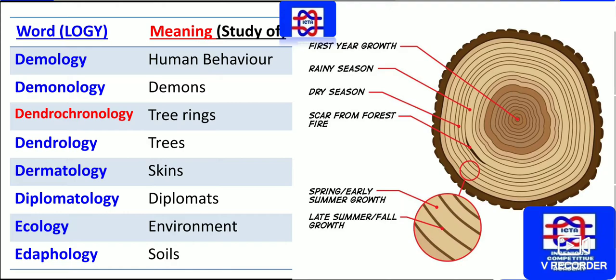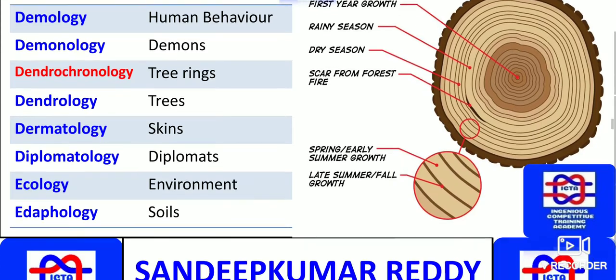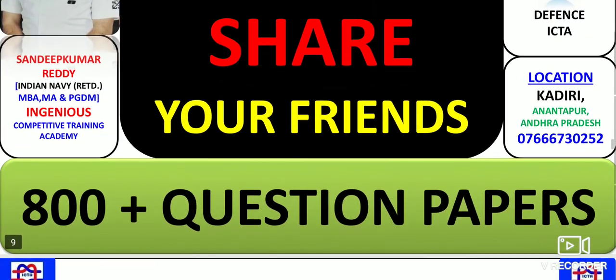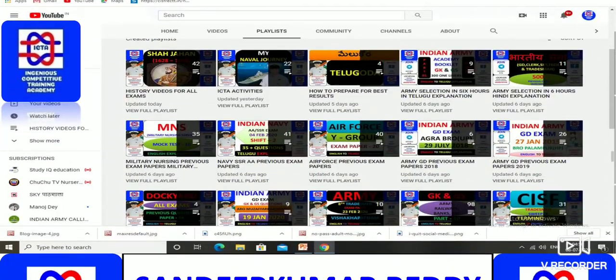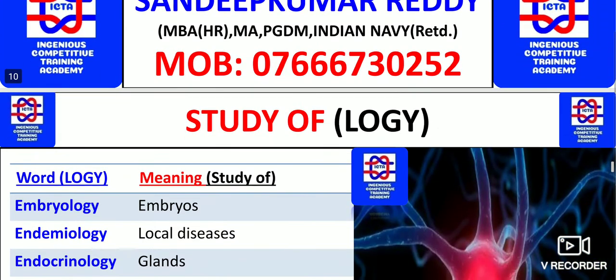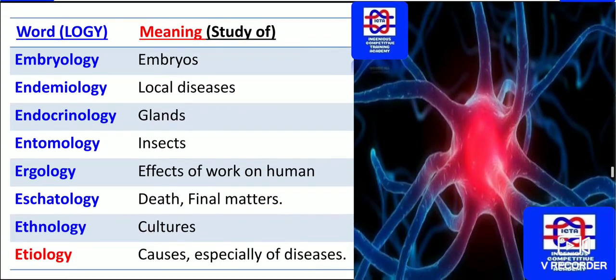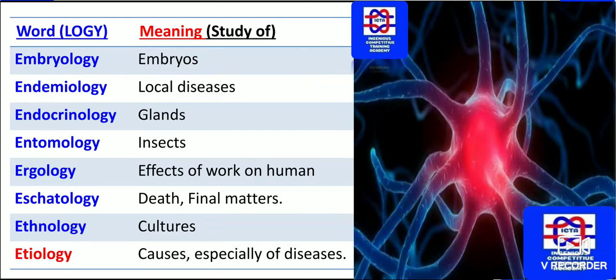The study of the environment is known as ecology. The study of soils is known as edaphology. Embryology is the study of embryos. The study of local diseases is known as endemiology, and the study of glands is known as endocrinology.